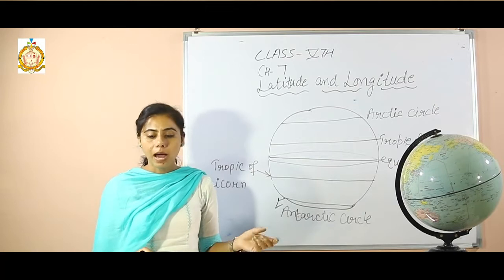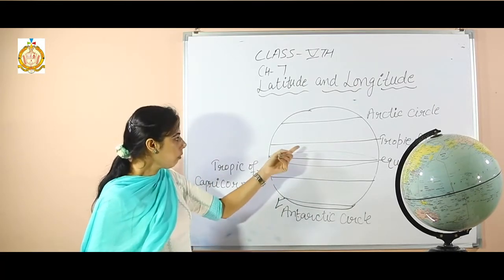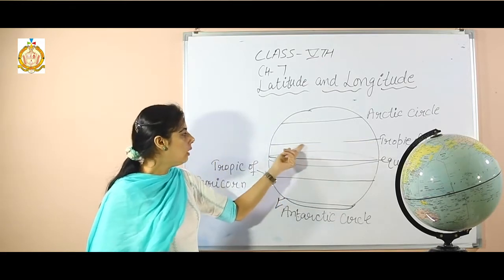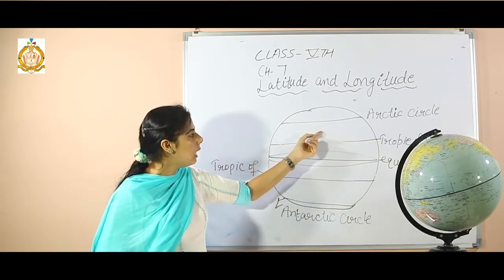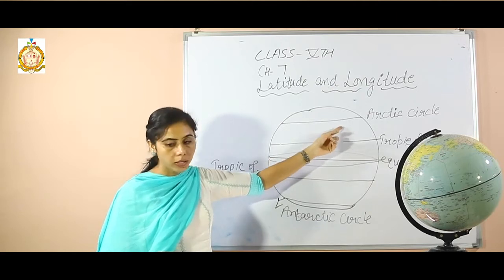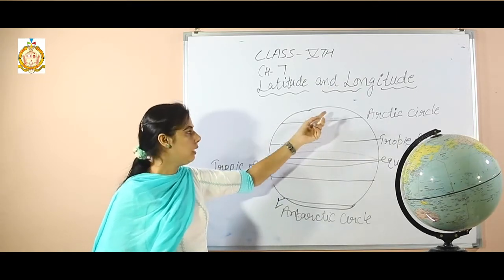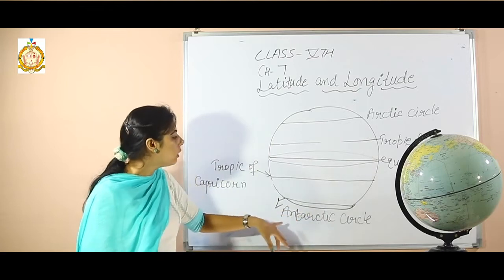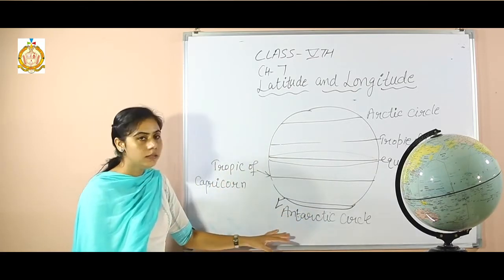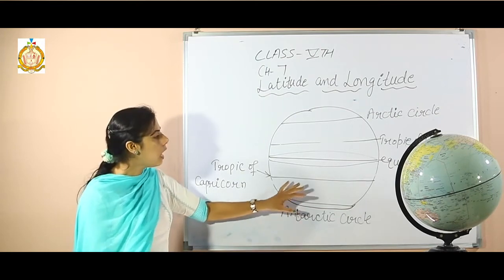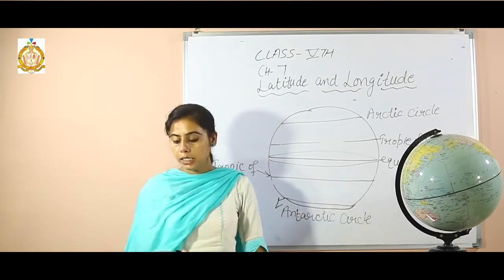The important parallels of latitudes are: the first one is the Tropic of Cancer, which is above the equator on the northern side. The second important parallel is the Arctic Circle in the north. On the south side, there is the Tropic of Capricorn and the Antarctic Circle. These are the important parallels of latitude.